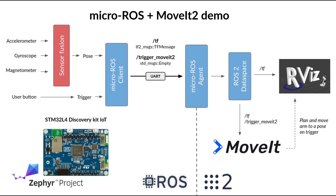We can now focus on the final part of this demo — the interaction of our Micro-ROS node with the ROS2 ecosystem. Once the agent receives the pose quaternion collected by the inertial measurement unit of the board, it sends it in the form of a ROS2 topic to the ROS2 world. Once this topic is in the ROS2 global data space, the data can be consumed by ROS2 nodes and applications built on top of the ROS2 user API.